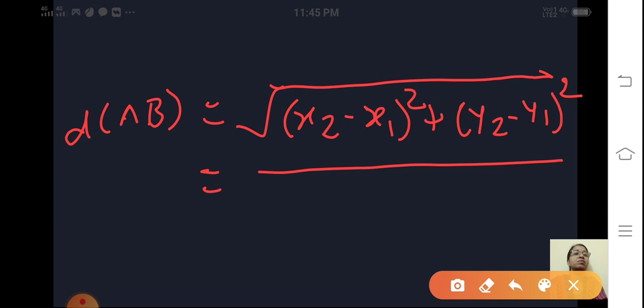Now substitute the values here. The coordinates are minus 2, 1 and 1, 5. So x2 is 1 minus of minus 2 that means plus 2.